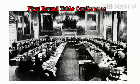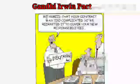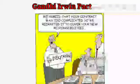For the Second Round Table Conference, we need to understand the Gandhi-Irwin Pact. As Gandhiji was in jail, negotiations took place and he agreed on certain points with Viceroy Lord Irwin. That is why this pact is known as the Gandhi-Irwin Pact.